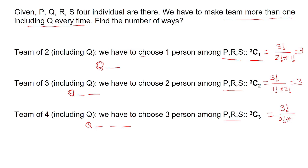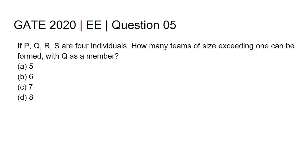So the total number of ways would be adding all three conditions: 3 plus 3 plus 1, and it would be equal to 7. So having four individuals P, Q, R, S, we can form a team of more than one people, every time including Q in the team. There would be 7 number of ways. So the answer for this particular question would be option C, that is 7. Thank you.